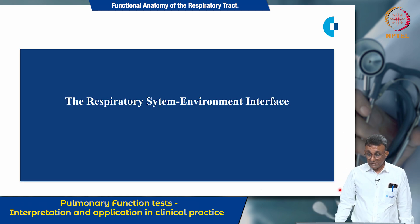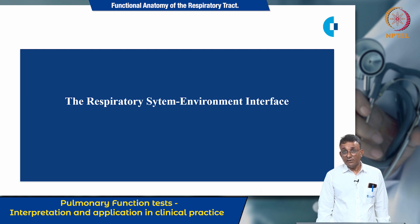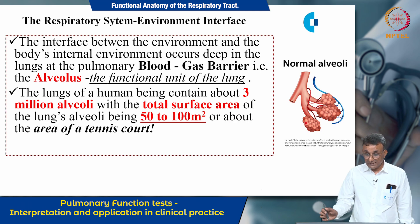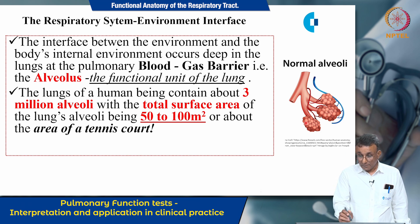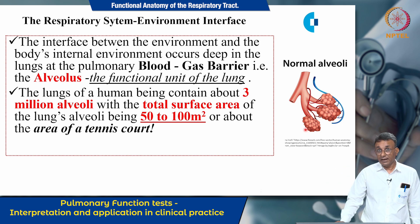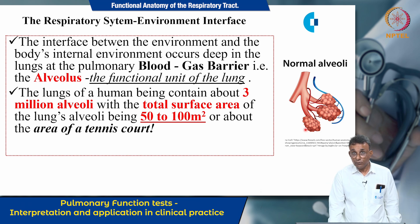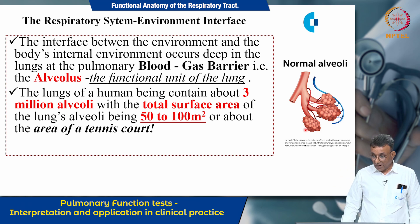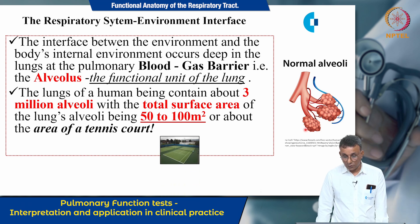The respiratory system environment interface, also known as the blood gas barrier, is depicted diagrammatically. The respiratory bronchiole continues as the alveolar duct and terminates as the alveoli, which is the functional unit of the lung. The lungs of a human contain about 3,000,000 alveoli, which have a total surface area of 50 to 100 meters squared — approximately the area of a tennis court.